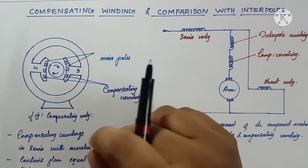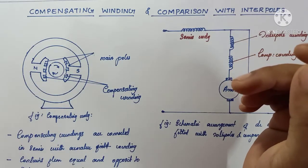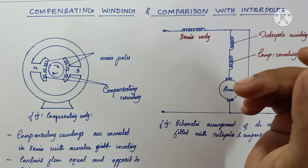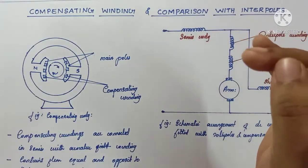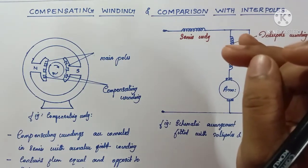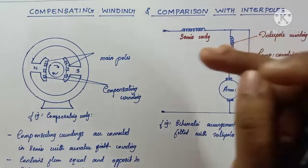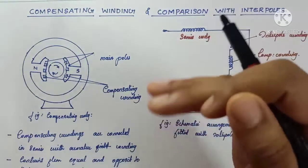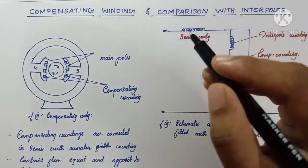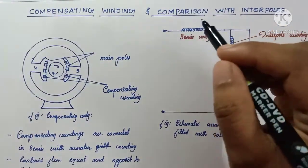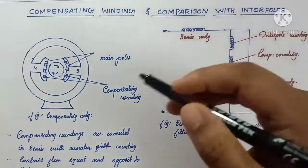Based on these discussions, we can conclude that commutation for DC machines can be improved by three methods. The first method is to use high-resistance carbon brushes instead of low-resistance copper brushes. The second method is the EMF or MMF method, which can be implemented by brush shifting or by using interpoles — the reactance voltage, which is the major cause of poor commutation, can be neutralized by interpoles. Brush shifting is not in practical use. The third method is the use of compensating windings.